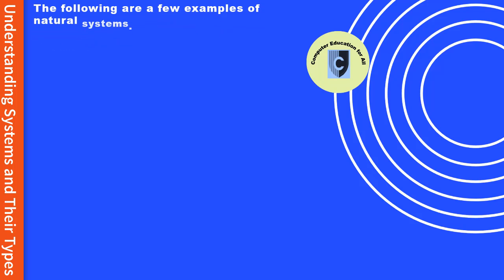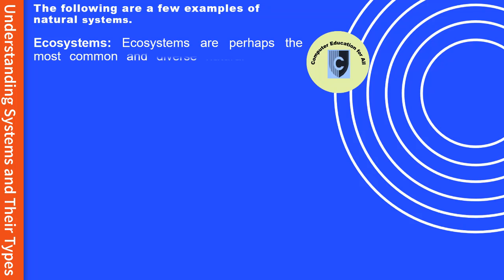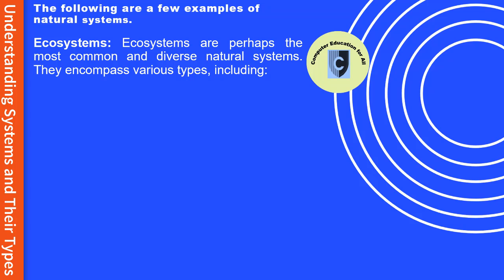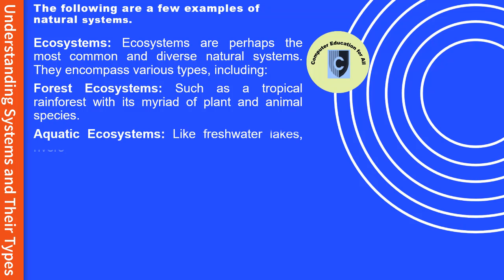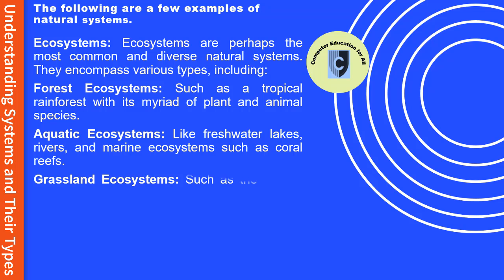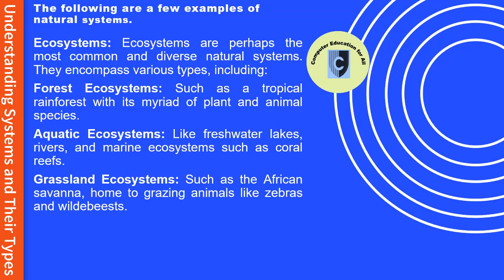Ecosystems are perhaps the most common and diverse natural systems. They encompass various types, including forest ecosystems such as a tropical rainforest with its myriad of plant and animal species; aquatic ecosystems like freshwater lakes, rivers, and marine ecosystems such as coral reefs; and grassland ecosystems such as the African savannah, home to grazing animals like zebras and wildebeests.